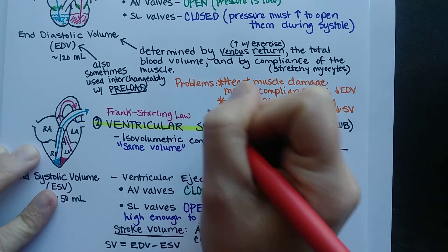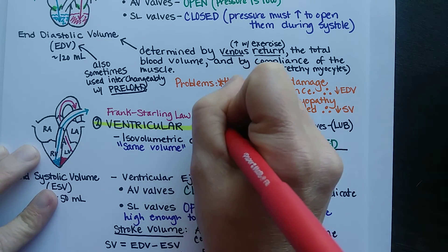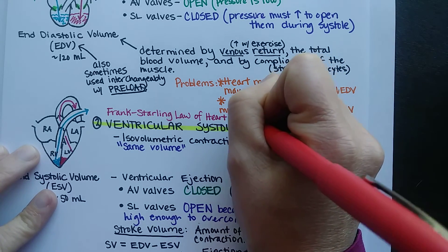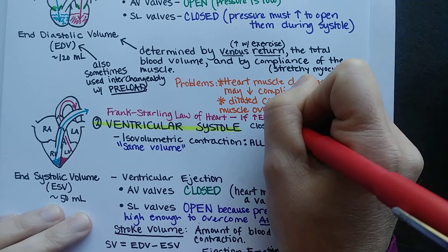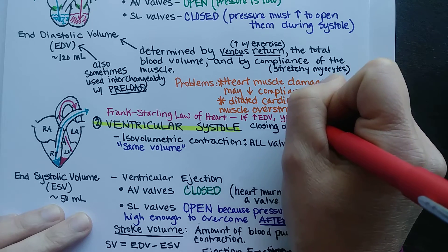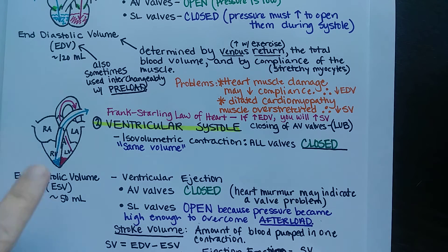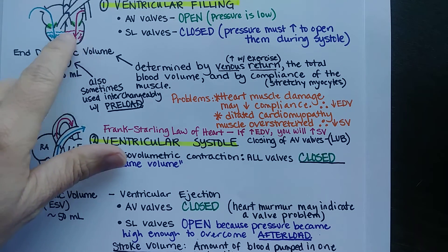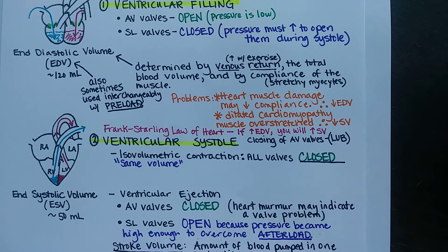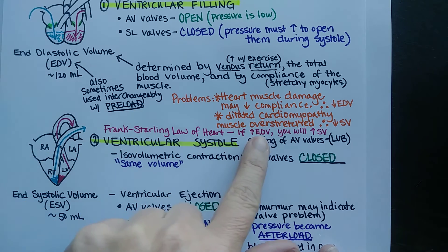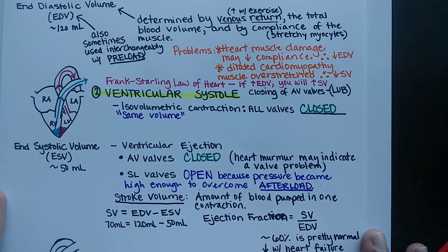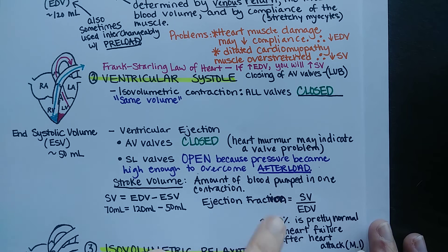Frank and Starling were two physiologists working in the early 1900s who established that if end diastolic volume — or preload — increases, stroke volume will increase. How much blood pours into the ventricle is the biggest determinant of how much blood gets pumped out. You can't have a large stroke volume without a large end diastolic volume. You want a high preload and a low afterload — you don't want the heart to have to push excessively hard just to open the semilunar valves.